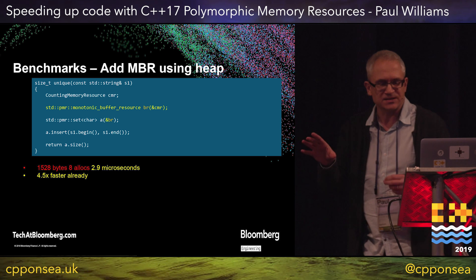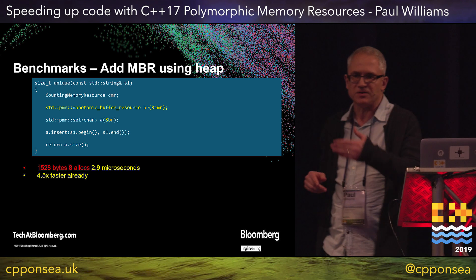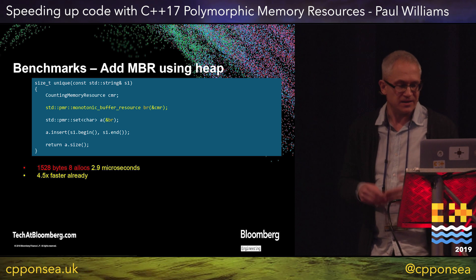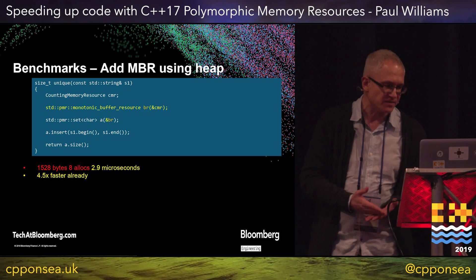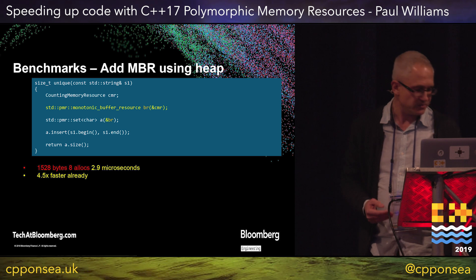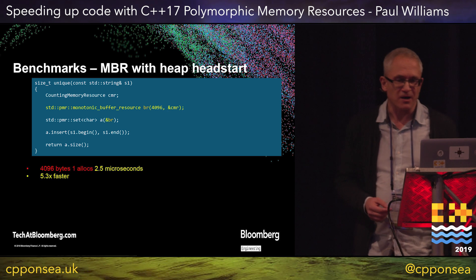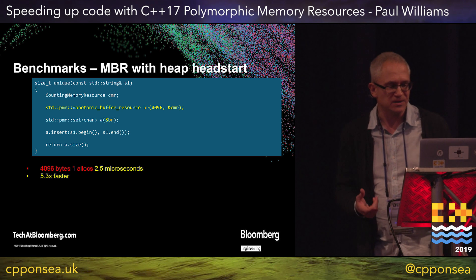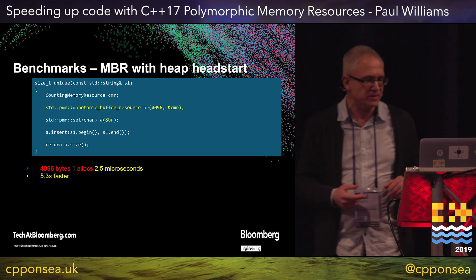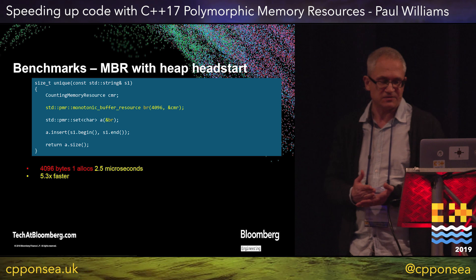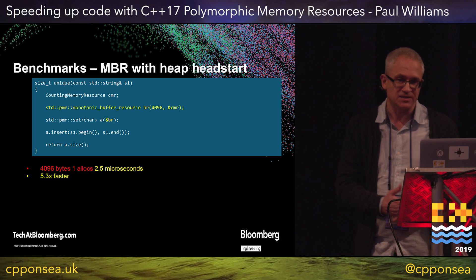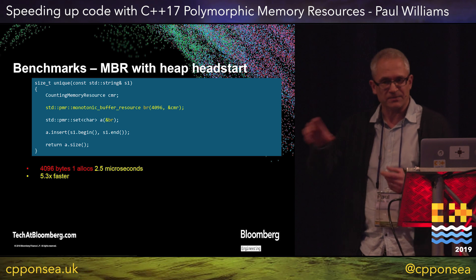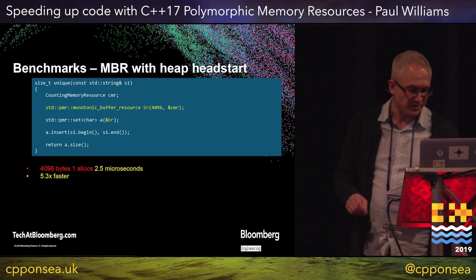Let's give it a bit of a head start — we'll tell it you can do a 4K allocation at the start. Let's plug that in: a little bit faster again, 2.5 microseconds, one allocation — 5.3 times faster. Now let's actually give it a stack buffer. When we run this, because we've measured, we know how much memory we need: zero bytes allocated from the heap, zero allocations. This thing is now running six times faster just because we've plugged in a stack-based allocator. Pretty great.